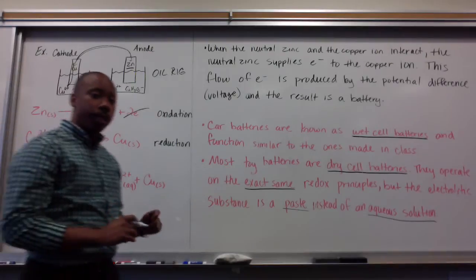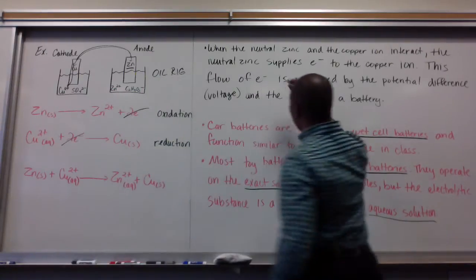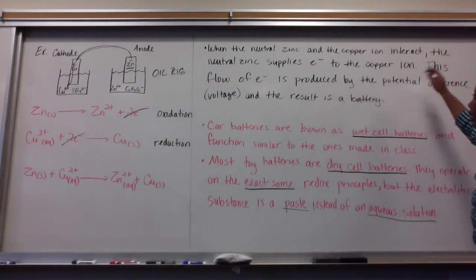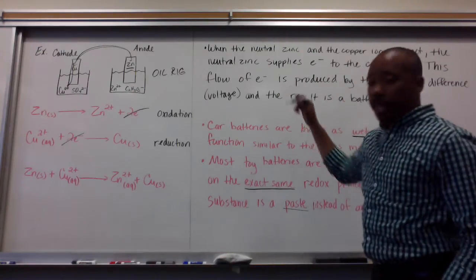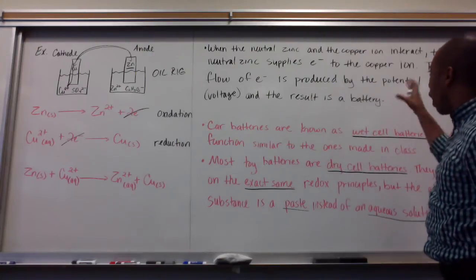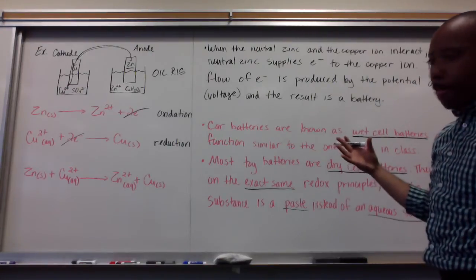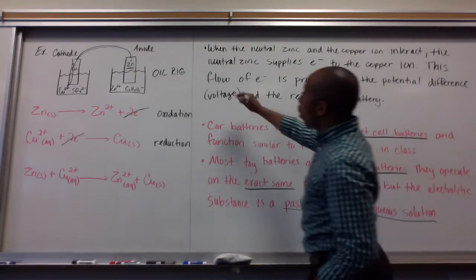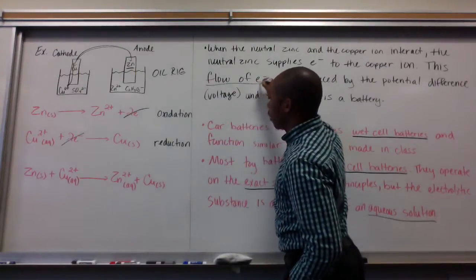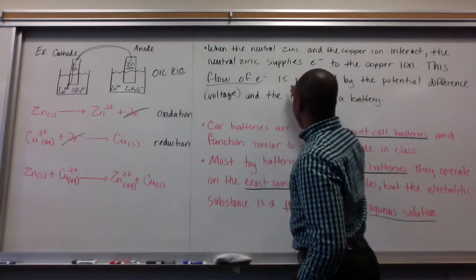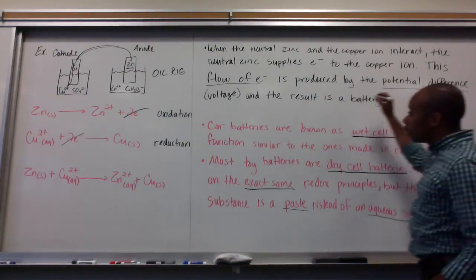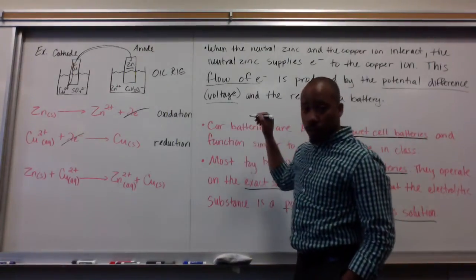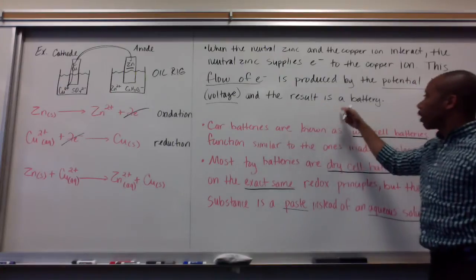So some closing notes here. When the neutral zinc and the copper ion interact, as we saw in our picture up here, the neutral zinc supplies electrons to the copper ion. We know that. This flow of electrons, we have a flow of electrons, it's the current, is produced by the potential difference, which is known as the voltage, and the result is a battery.